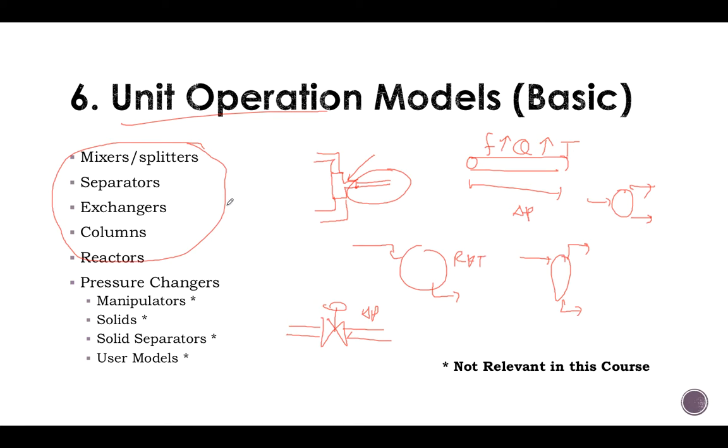The most common ones that we are going to analyze in Aspen are mixers or splitters, separators, exchangers, columns, reactors, and of course, pressure changers.